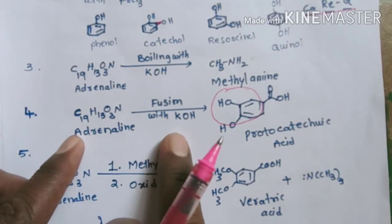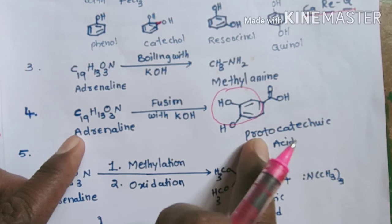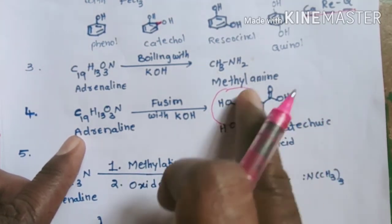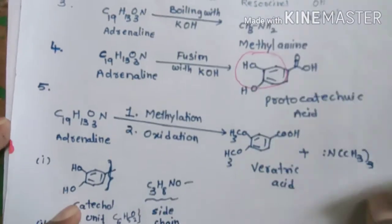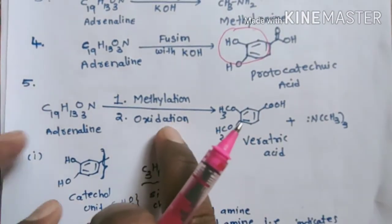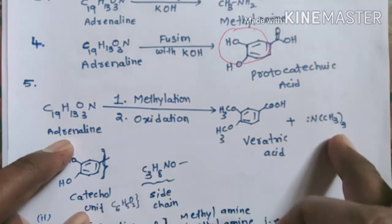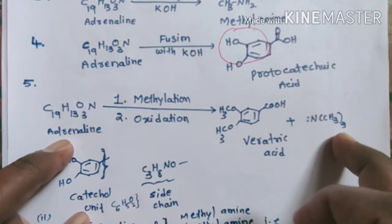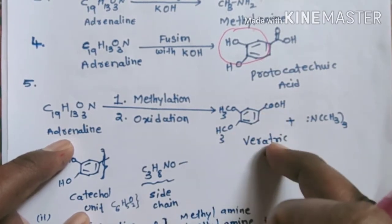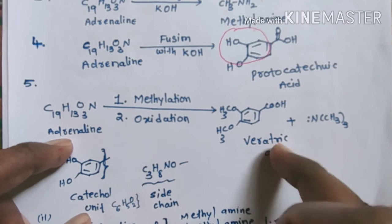When adrenaline is fused with KOH solution, we get protocatechuic acid, which contains a catechol group. When adrenaline is subjected to oxidation after methylation, we get veratric acid and trimethylamine. Veratric acid is also a derivative of catechol, confirming the presence of a catechol group in adrenaline.